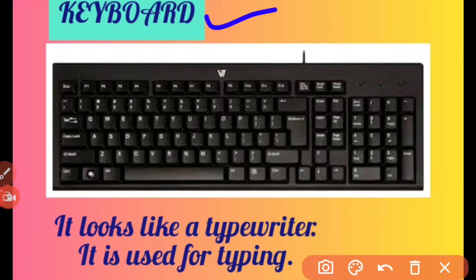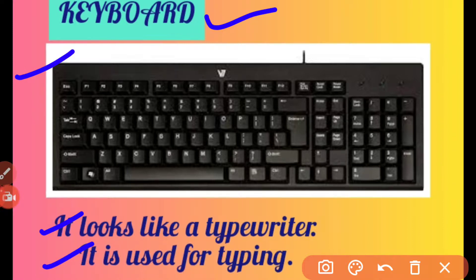First we understand what is a keyboard. Students, just look at the picture of the keyboard here. It looks like a typewriter and it is used for typing letters, words, numbers and special symbols. You can see letters, numbers and special symbols on it.